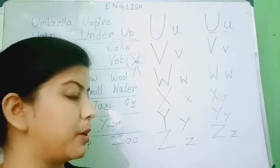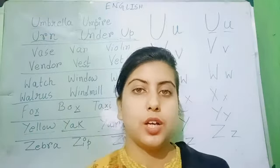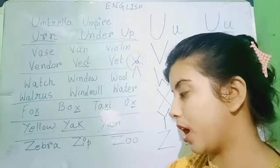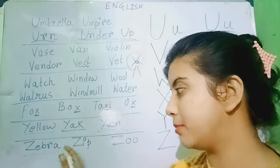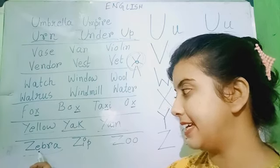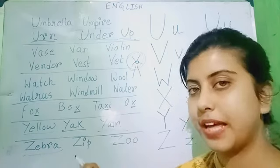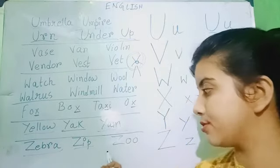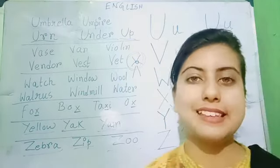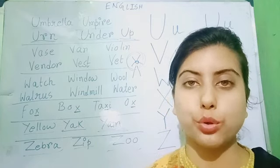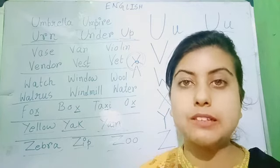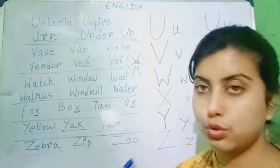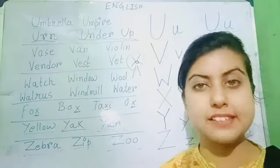Now, we will look at some words which start with Z. Zebra. Zebra is an animal. Z-E-B-R-A. Zebra. Next, we have zip. Z-I-P. Zip. Next, we have zoo. Z-O-O. Zoo. Zoo is a place where animals are kept. So, zebra, zip, zoo — these are the words with Z.